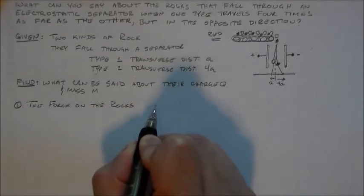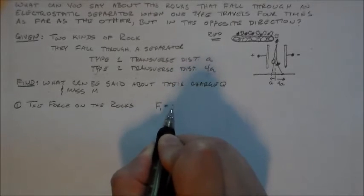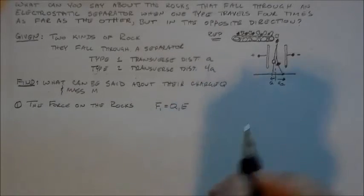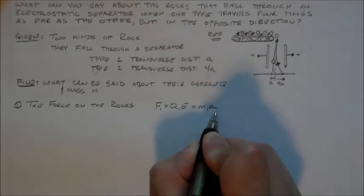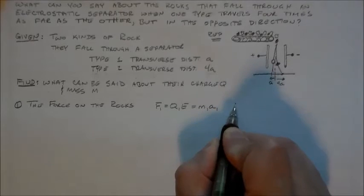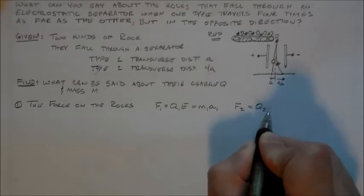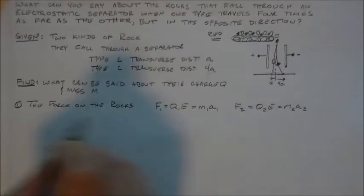So we're going to start with the force on the rocks. This is really easy. We know what the force is. F equals Q1E, right? F1 equals Q1E, and it's also equal to MA, so M1A1, right? And F2 is equal to Q2E is equal to M2A2.